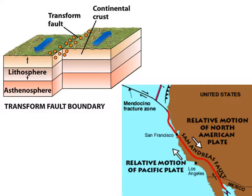Finally, we look at transform plate boundaries. This happens when two plates slide past one another. This is the type of boundary the San Andreas Fault represents.